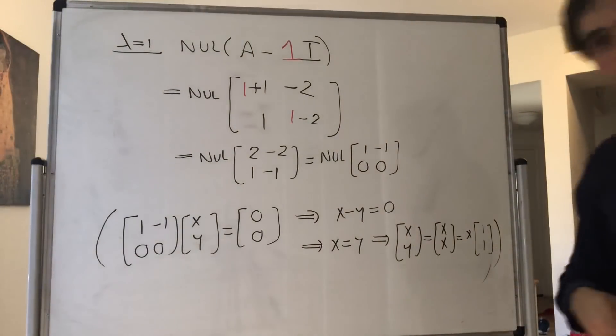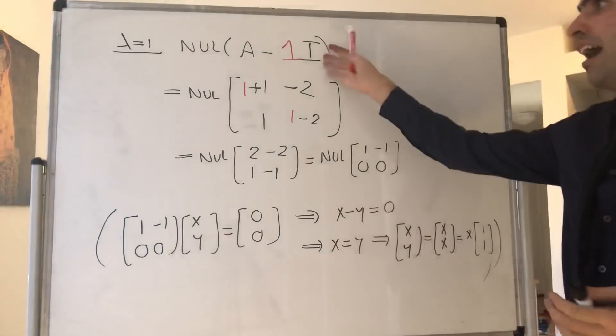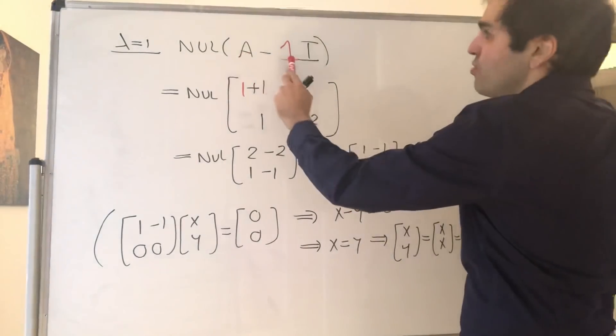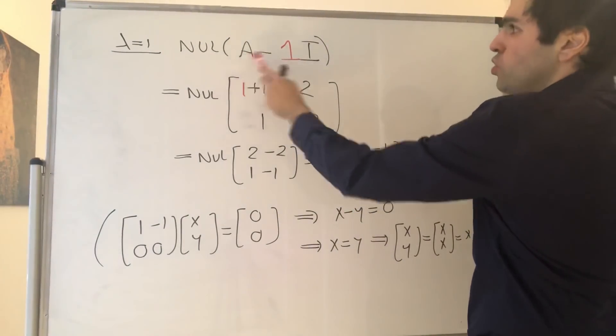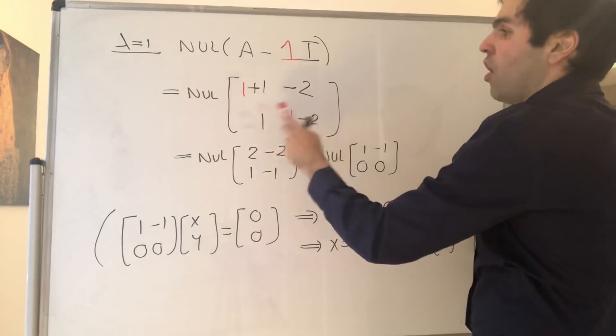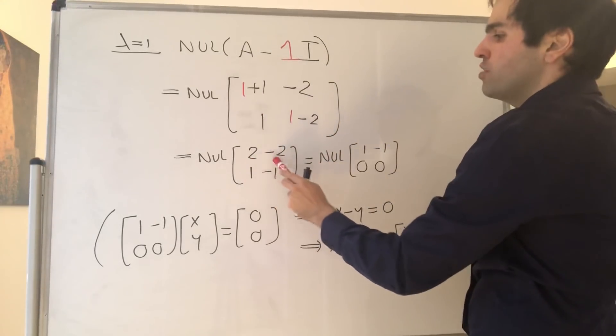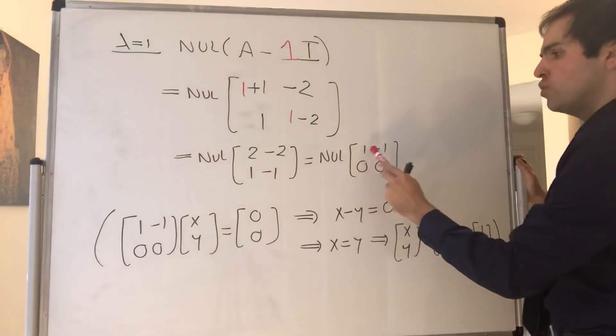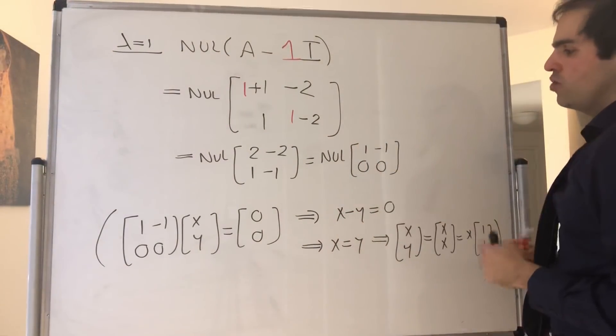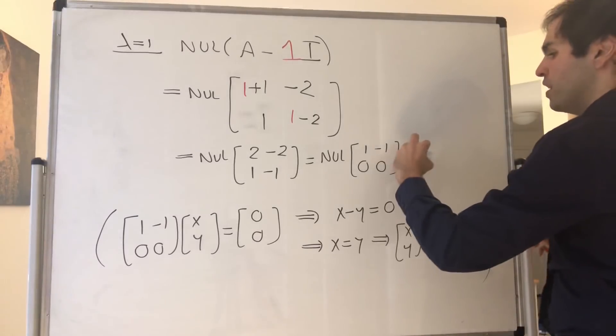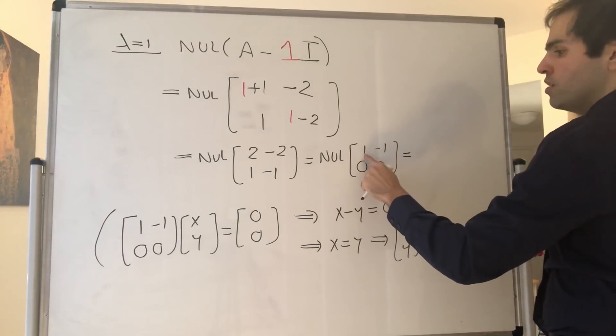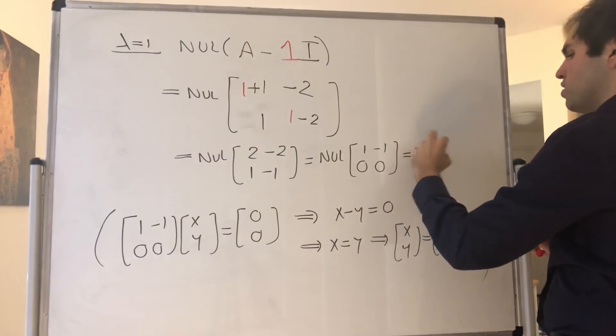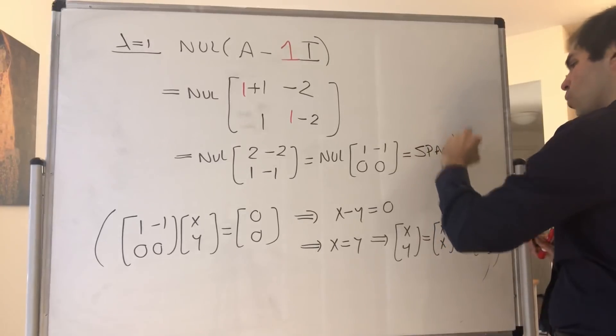And then for the other eigenvalue, it's almost symmetric - no pun intended. But look, you just replace lambda equals 1. So you do null space of A minus 1I, which ultimately becomes the null space of [2, -2; 1, -1], which you can reduce to [1, -1; 0, 0]. And the point is, well notice, if you have, let's say [1, 1], then you do get 0. So this becomes the span of [1, 1].